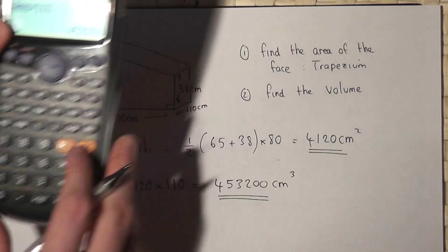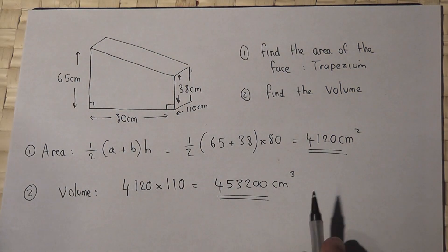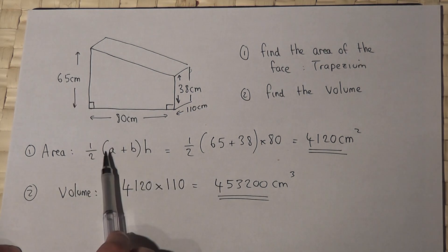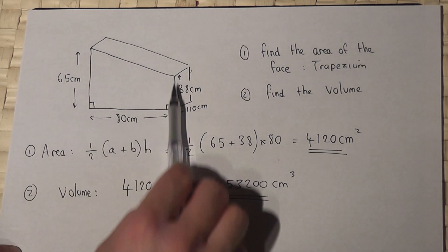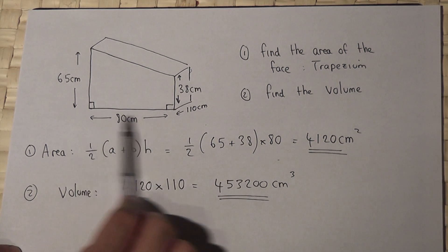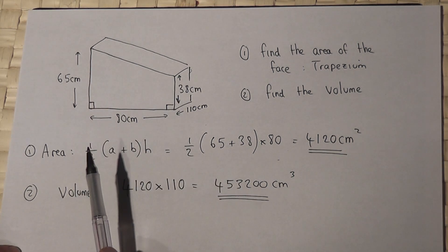So there we go. A quick recap. For a trapezium, the area is a half A plus B, where A and B are the parallel sides, times H, where H is the distance between the two parallel sides.